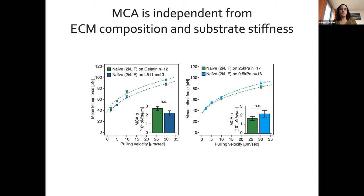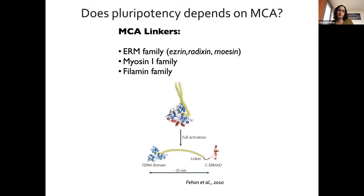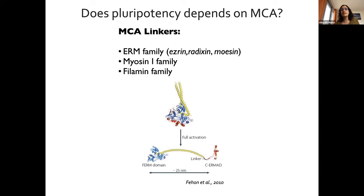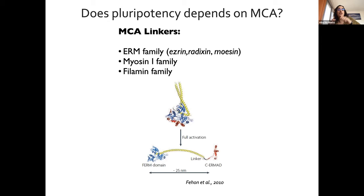Now we have the chicken-and-egg question: does pluripotency depend on membrane-to-cortex attachment, or is it simply downstream of differentiation? To answer this, we turned to endogenous membrane-to-cortex attachment linkers. In cells there are different families, but the canonical ones are the ERM family — ezrin, radixin, and moesin. This family conveniently transitions between a folded state, and upon a single phosphorylation, the protein opens up: one side binds to the membrane and the other binds to actin. You can change a single amino acid to generate a dominant negative or constitutively active version.